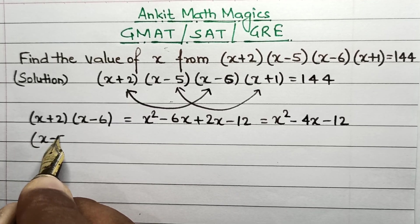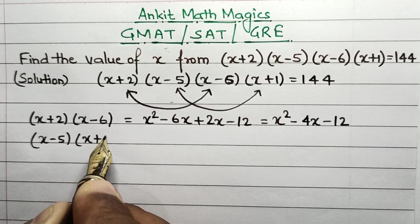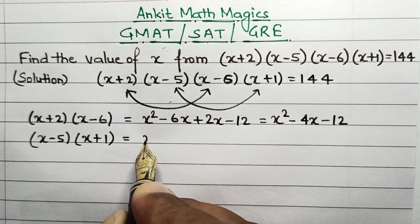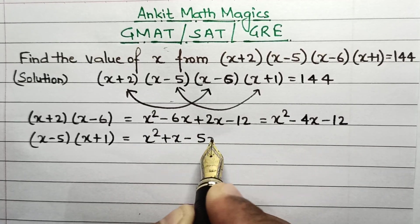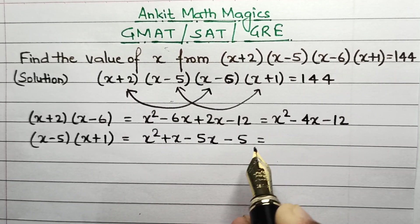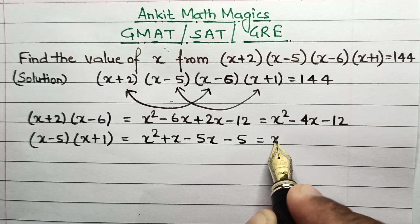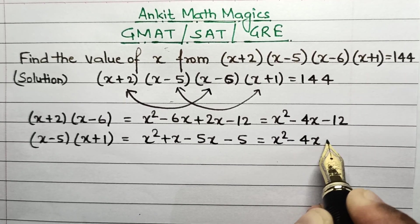And the second grouping is (x-5)(x+1). So let's multiply this: x² + x - 5x - 5, which is x² - 4x - 5.